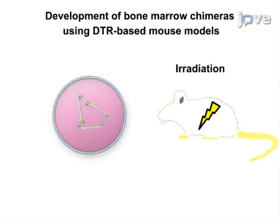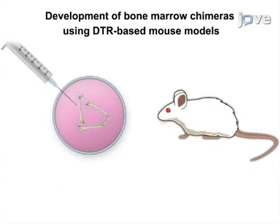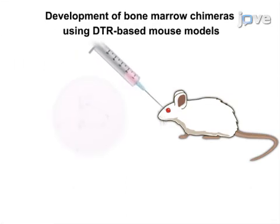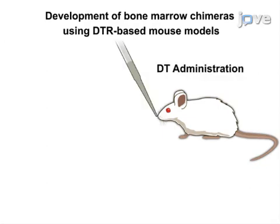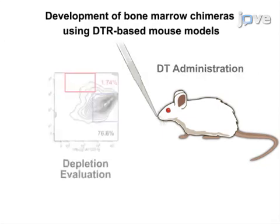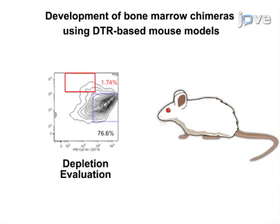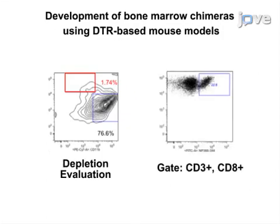To analyze the immune response in more detail, a competitive bone marrow chimera is made by infusing diphtheria toxin receptor-expressing bone marrow cells into irradiated congenic mice, which are then exposed to diphtheria toxin. After a successful depletion, the mouse is vaccinated and labeled antibodies and tetramers are used to identify CD8-positive T-cells recognizing the specific peptide.